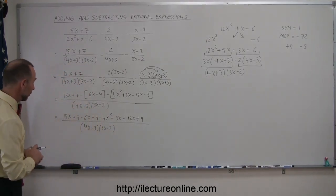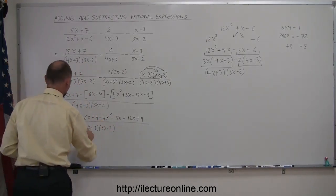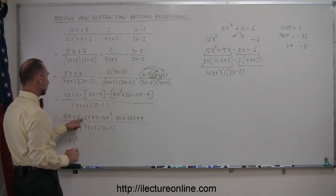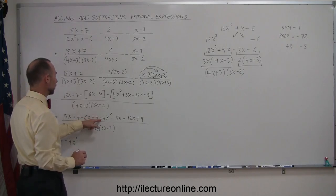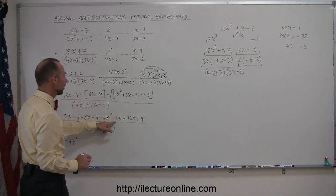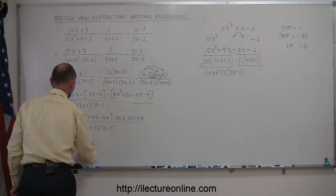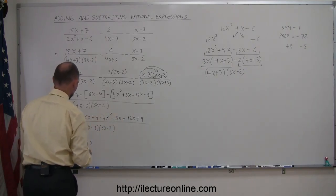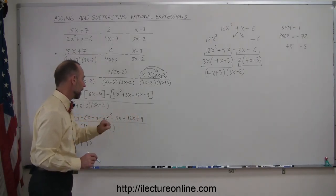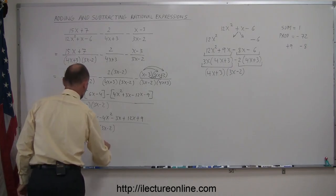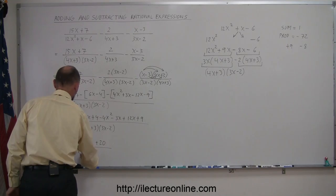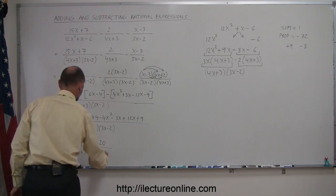So this would be equal to 15x + 7 - 6x + 4 - 4x² - 3x + 12x. And the minus times the minus is plus 9. All divided by the common denominator of (4x + 3) times (3x - 2). Now, we have to combine like terms. So here we have a minus 4x². We have a 15x - 6x, that's 9x - 4x, that's 5x - 3x, which is 2x + 12x is plus 14x. So this is plus 14x. And then the numbers. We have plus 7 plus 4, which is plus 11. And plus 9 is plus 20.